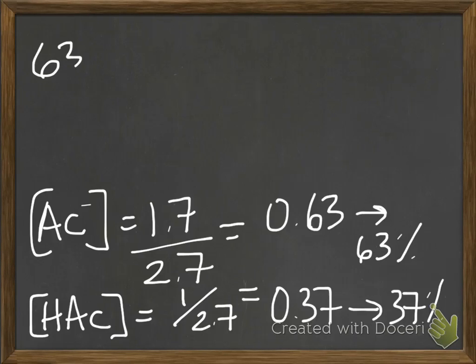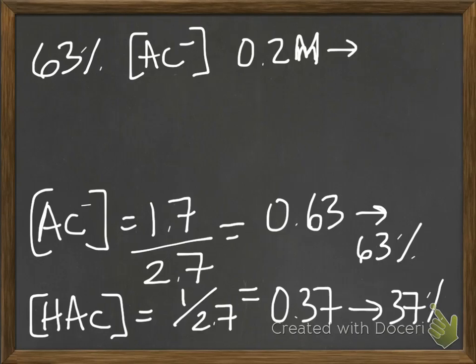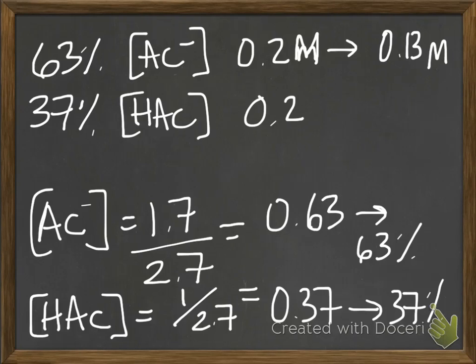So then they just do the math and say 63% is acetate, and it's 63% of 0.2, because that's the total amount that we have. And when you take 63% of 0.2, you come up with 0.13. 37% is acetic acid, and the total is 0.2 molar. And if 37% of it is acetic acid, then you have 0.07 molar of acetic acid. So it's just a slightly different way of looking at it on a ratio level, or on a math level. A little bit different from the way we did it in class, but the concepts are the same.